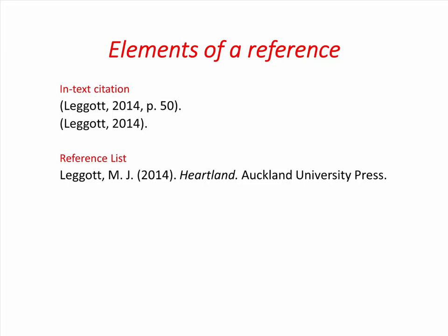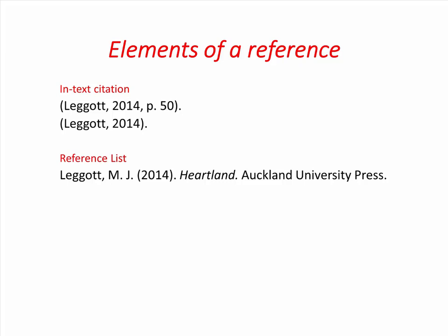A reference list entry should provide the full bibliographic details of each source cited in your assignment. Four main elements are required: author, date, title, and source details. Each element is separated by a full stop.